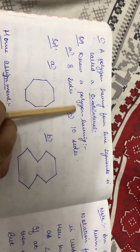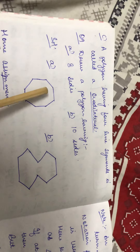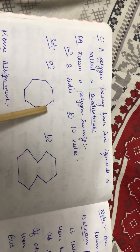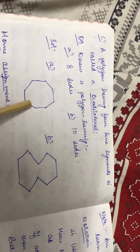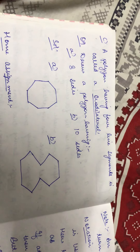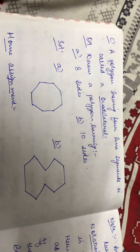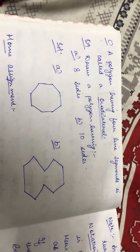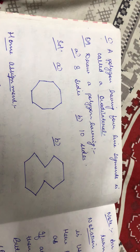Next question is: draw a polygon having eight sides. Counting eight sides — one, two, three, four, five, six, seven, eight. A polygon means made up entirely of line segments and having a closed curve. So this is a polygon with eight sides.